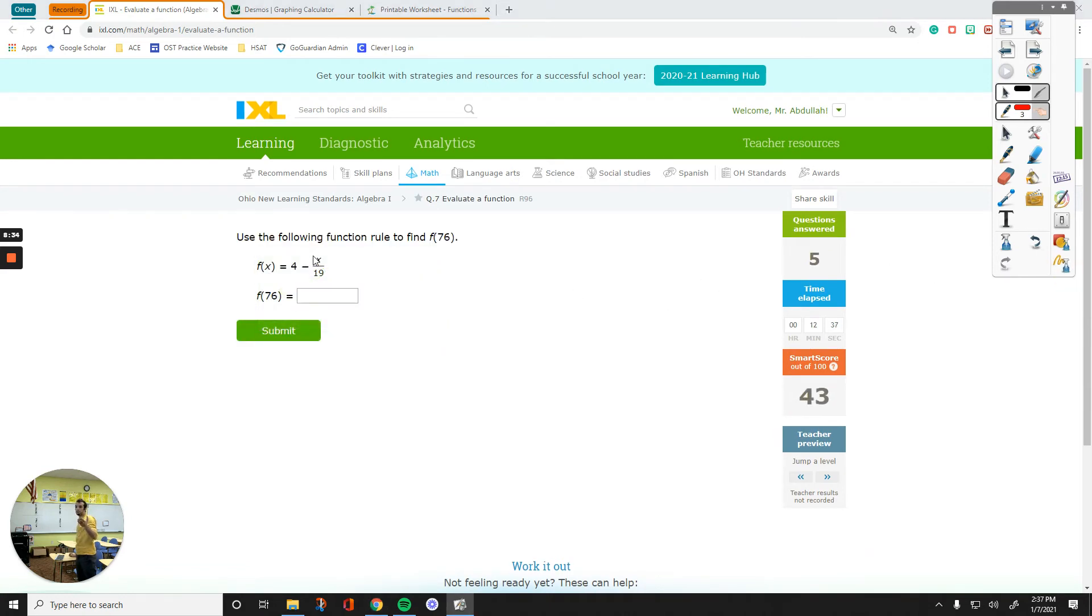You can do the same thing with this question. Use Desmos to double-check your work. But, all you have to do, let's just, this is easier than the other one. Take that X value, plug it in for X. Now, my question is, what is the value of 4 minus 76 divided by 19? This right here is 4. 76 over 19 is 4. There's a negative right in front of it, and then there's 4. So, 4 minus 4 is 0. This is the value of F of 76. So, when you plug in 76, that's what happens. It equals to 0.